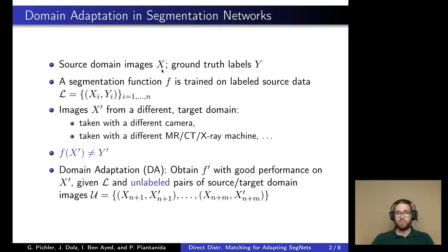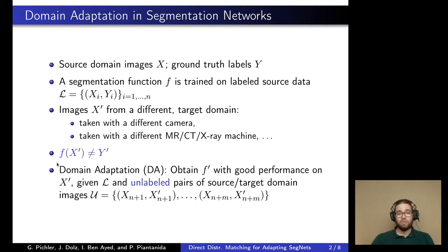If we have source domain images and their corresponding ground truth labels, then we can train a segmentation function for that domain based on this labeled dataset. But if we then face new images from a different target domain — for example taken with a different camera or machine — then usually that segmentation function is going to yield poor results on that new dataset.